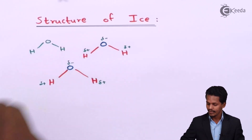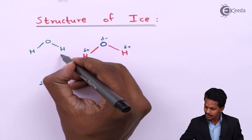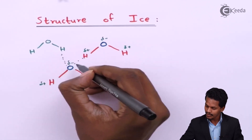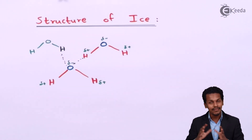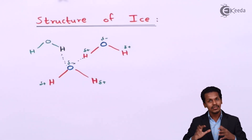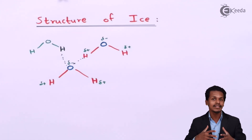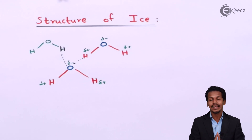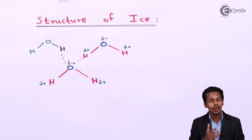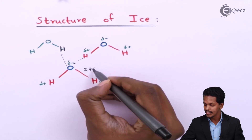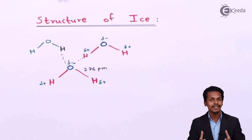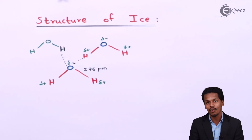As you can see, this oxygen atom is surrounded by four hydrogen atoms, and that's the reason the structure is basically a tetrahedral shape. This is how the structure of ice is — a three-dimensional crystalline form. According to x-ray study, the distance between oxygen and hydrogen has been found to be 276 pm.